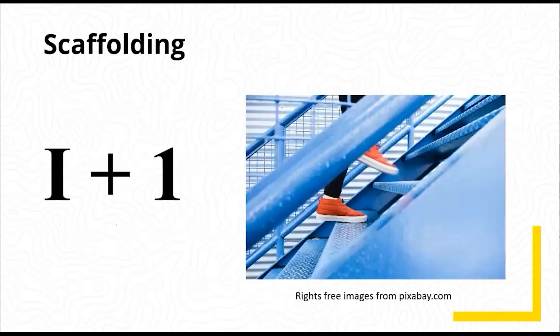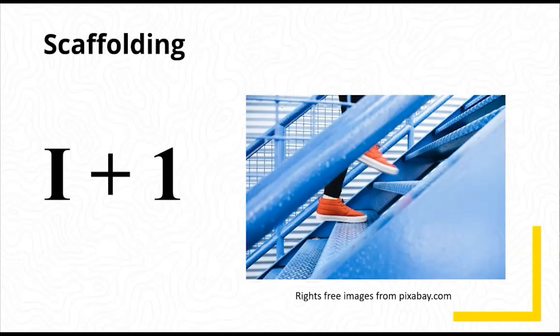A key idea linked to scaffolding is Krashen's input hypothesis from 1977. If we have 100 steps in front of us, we cannot jump from the bottom to the top. It's fairly easy to walk slowly up one step at a time. Learners progress in their knowledge of the language when they comprehend input that is slightly more advanced than their current level. Krashen called this I plus one, where I is the learner's interlanguage and plus one is the next stage of acquisition. An A1 level student is not going to learn much from a C2 text.